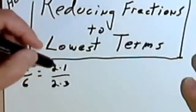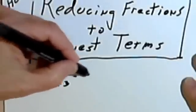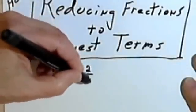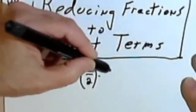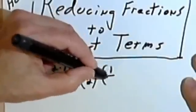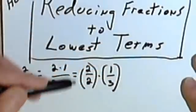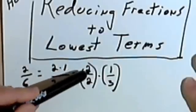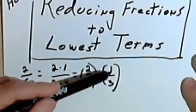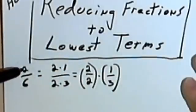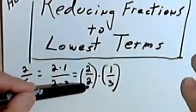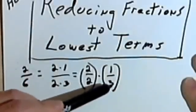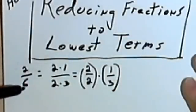Now if we think about it, we could also write this as 2 halves times 1 third. Because if we have two fractions and we have them multiplied, basically we multiply the numerator times the numerator. That would get us back to the original 2. And we multiply the denominator times the denominator. That gets us back to the original 6.